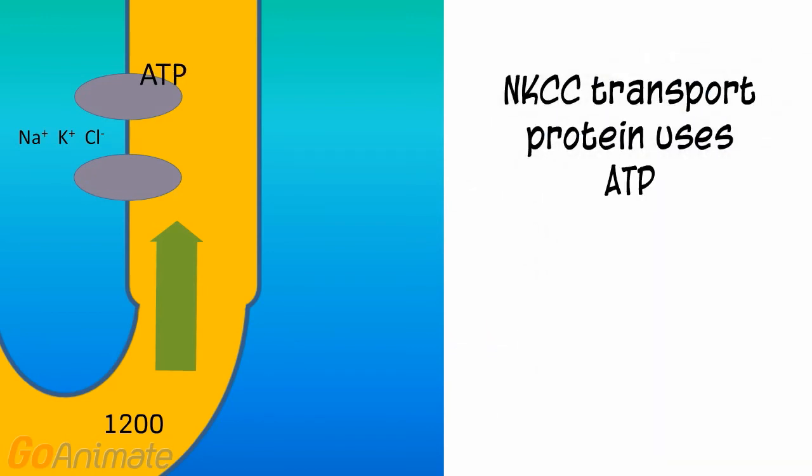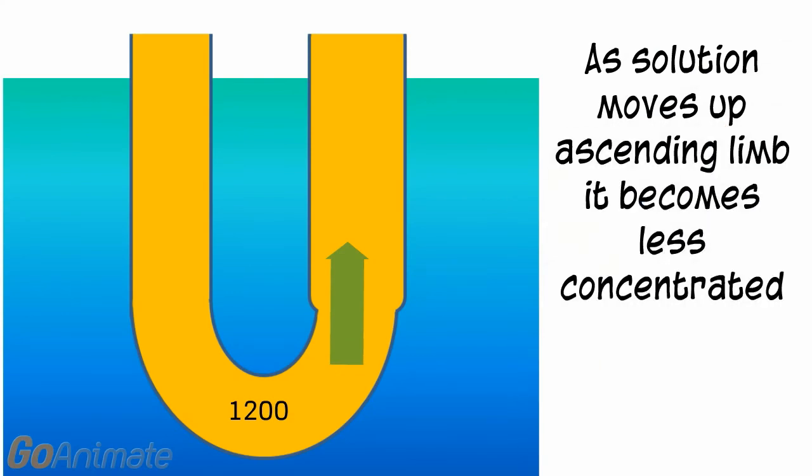The NKCC protein uses ATP, so energy is expended in order to maintain the gradient. Since solute is leaving the ascending limb, the solution becomes less concentrated.